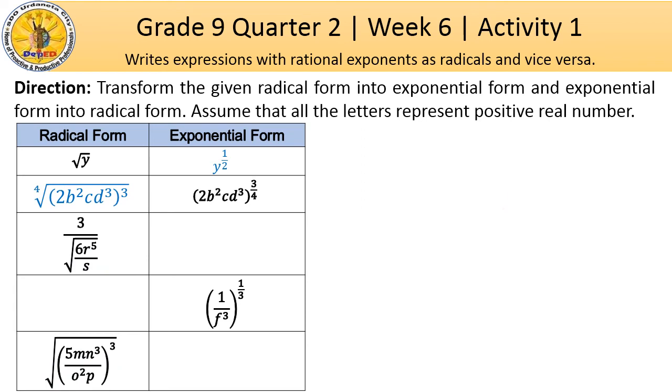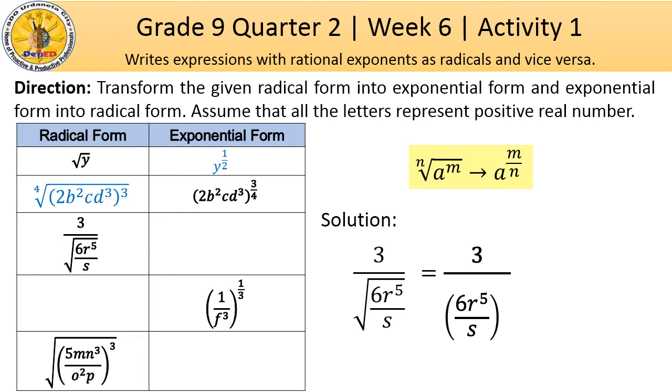Third one, from radical form to exponential form. Kung napapansin ninyo, yung denominator lamang ang naka-radical form. Therefore, iyon lamang ang itatransform natin into exponential form. So, copy 3, all over quantity of 6 raised to 5 over s. Which is yung nasa loob ng radical sign natin. Then, we put parenthesis on it.